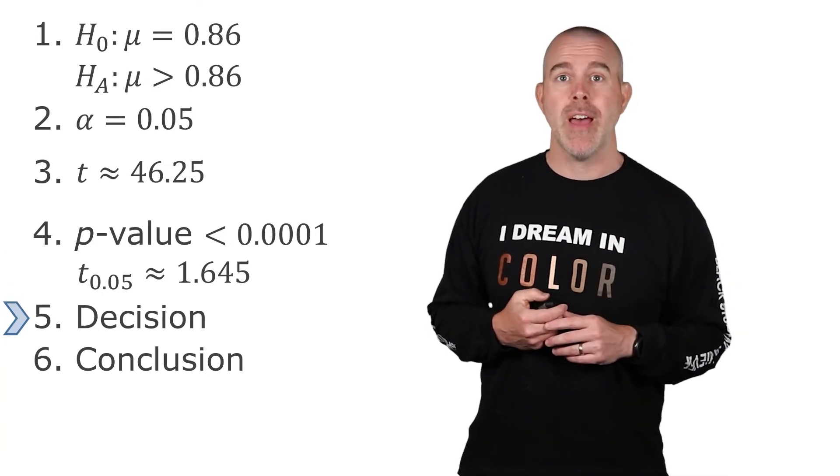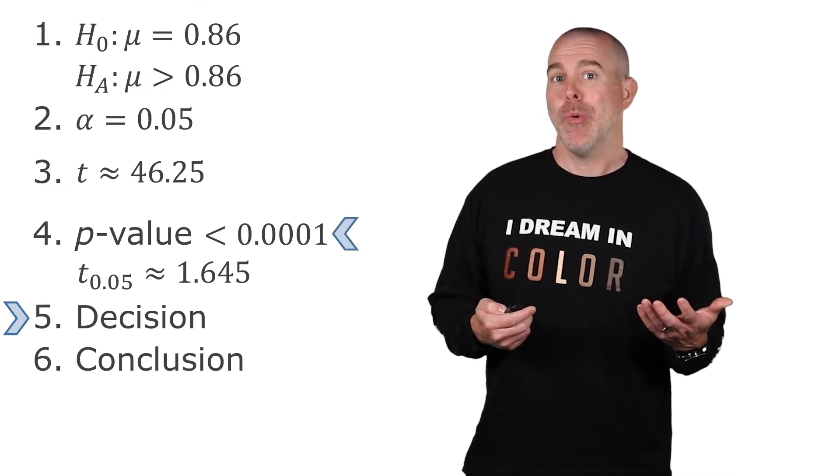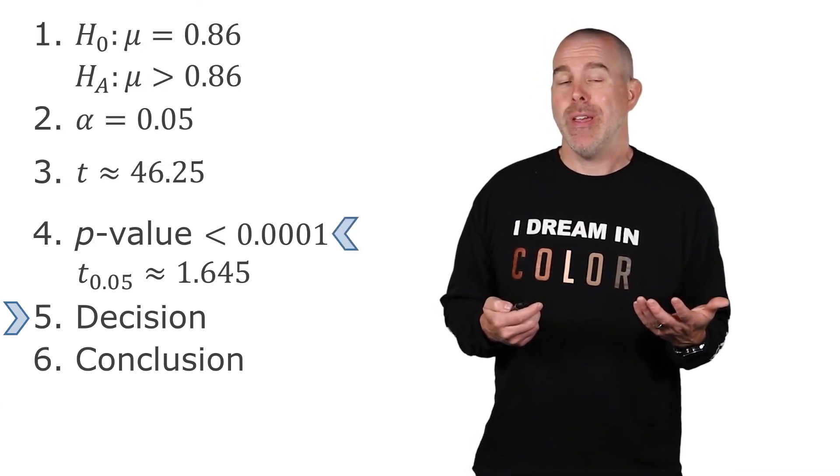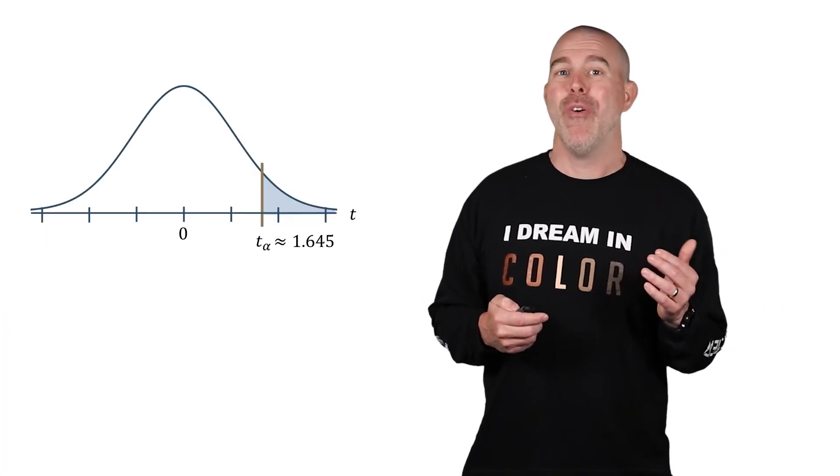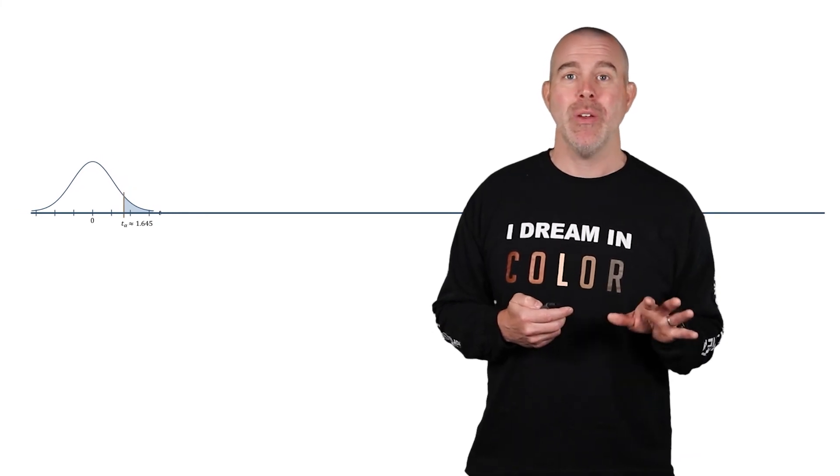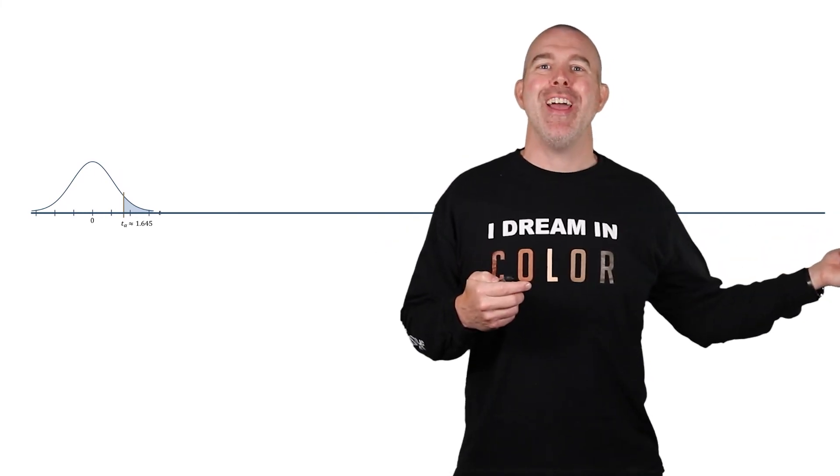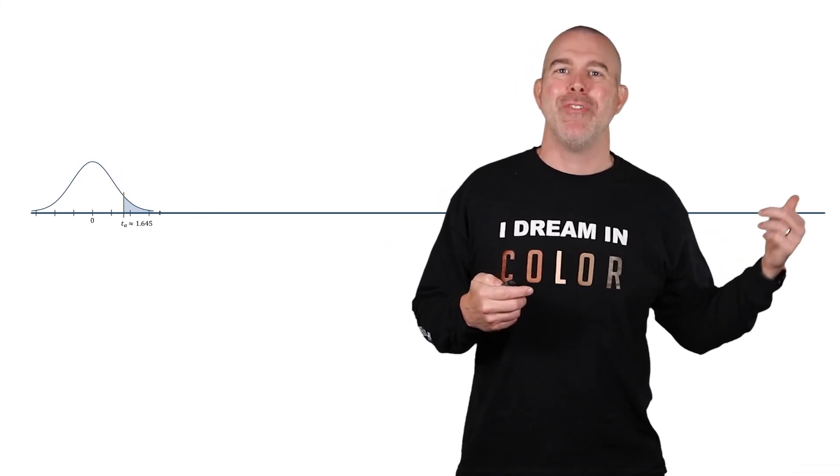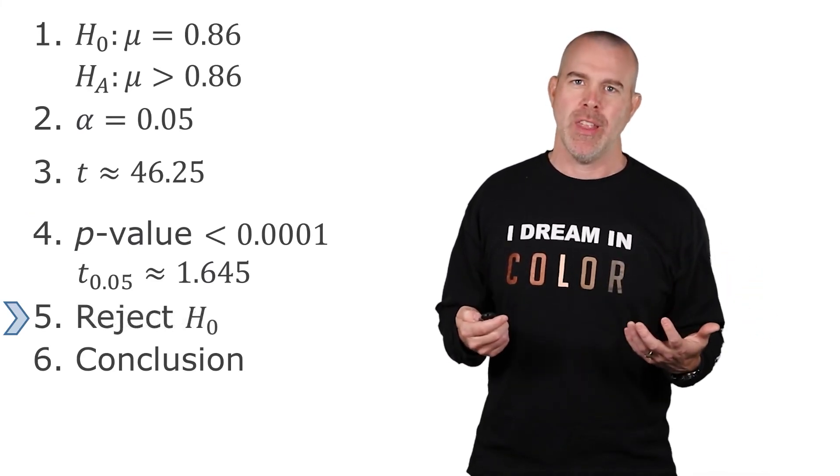Let's continue on in the hypothesis testing process here. We need to make our decision. Well, our p-value here is clearly very small, so we should reject. If we look at the position of our critical value, that's 1.645. And then way, way over on the other side is our 46.25. So clearly, we're going to reject the null hypothesis.